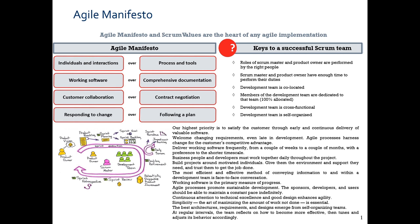A recap of the Agile Manifesto: individuals and interactions over processes and tools, working software over comprehensive documentation, customer collaboration over contract negotiation, responding to change over following a plan. The things on the right-hand side are indicators of traditional methodologies versus the Agile methodology on the left-hand side.